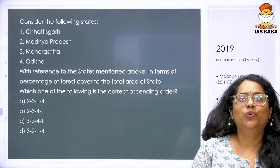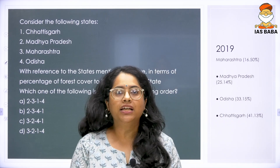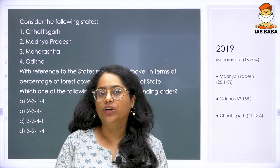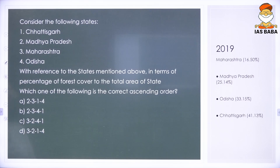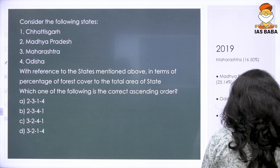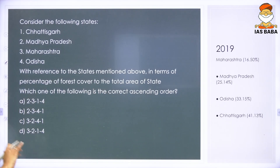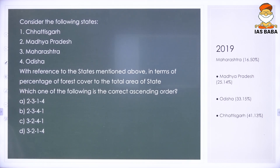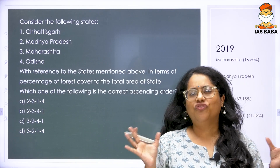Next, we have a 2019 question. The question reads: consider the following statements — Chhattisgarh, Madhya Pradesh, Maharashtra, Odisha. With reference to the states mentioned above, in terms of percentage of forest cover of the total area, which one of the following is the correct ascending order? This is based on 2019 data. According to you, which one of these states might be having large areas of forest covered?